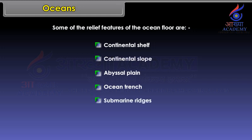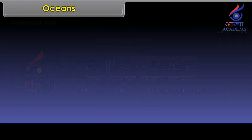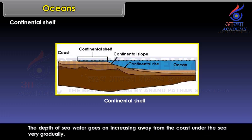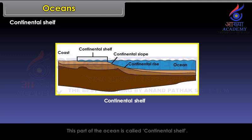Continental Shelf. From the coast towards the open sea there is a stretch of shallow sea. The depth of sea water goes on increasing away from the coast very gradually. This part of the ocean is called the Continental Shelf.